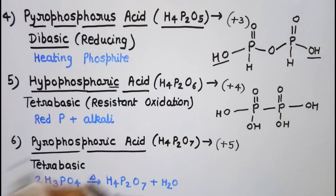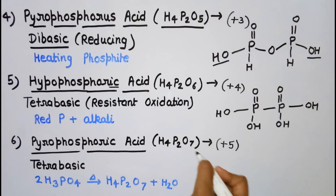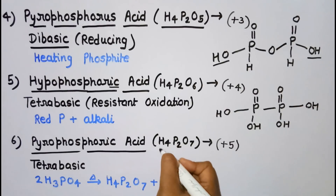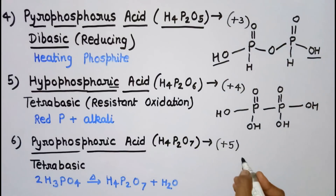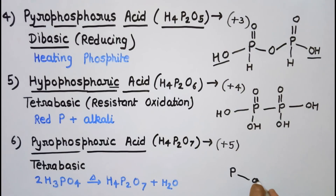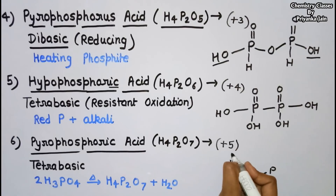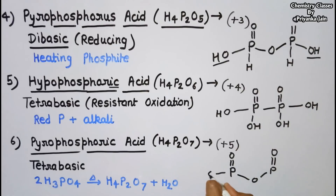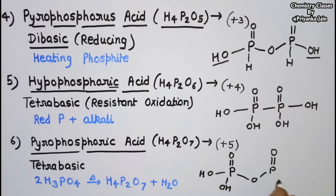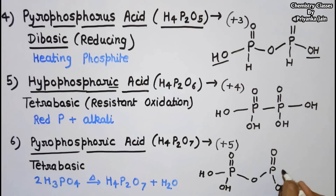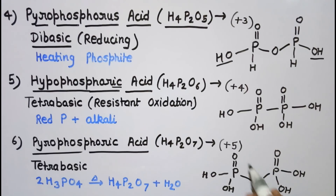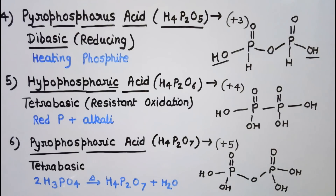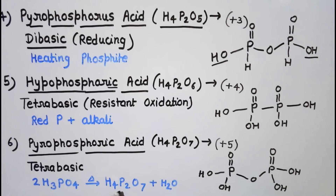Pyrophosphoric acid, also called diphosphoric acid, has formula H₄P₂O₇. Most questions are asked related to this acid. Phosphorus is in the +5 oxidation state. The 'pyro' term indicates a P-O-P linkage. Its structure: a P-O-P linkage, two P=O groups, and four OH groups. Questions may ask how many OH groups are present — four hydroxyl groups are present, so it is tetrabasic in character. It is prepared by heating orthophosphoric acid.